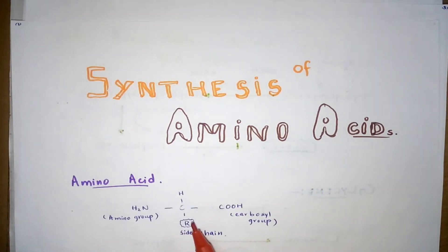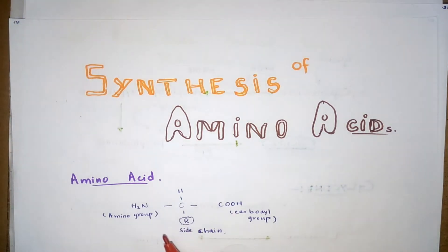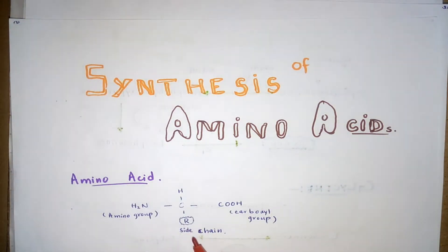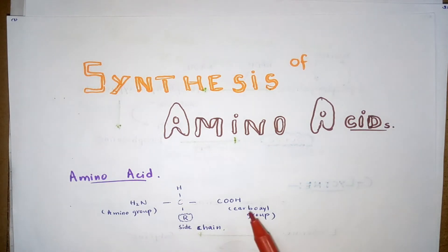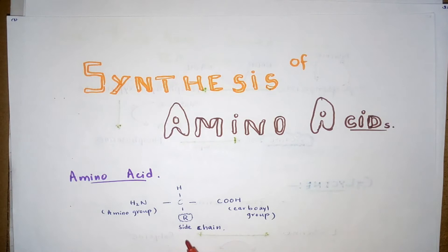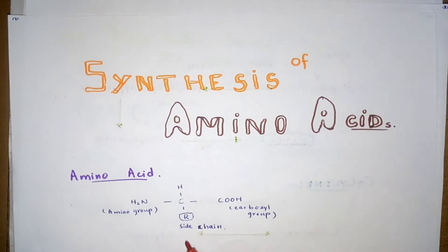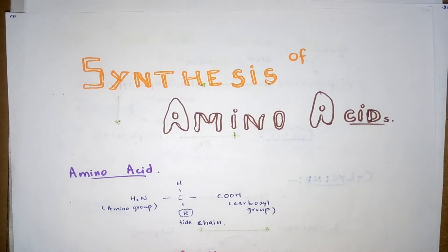Amino acids are organic compounds that possess an amino group and a carboxyl group along with a variable side chain R group. This is the structure of the amino acid. There are almost 20 amino acids that make up the human body mass — 10 are essential and 10 are non-essential amino acids.